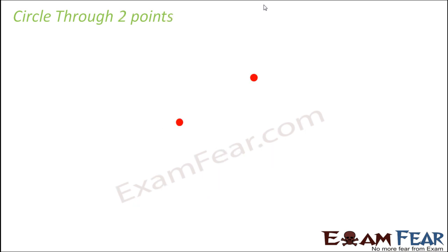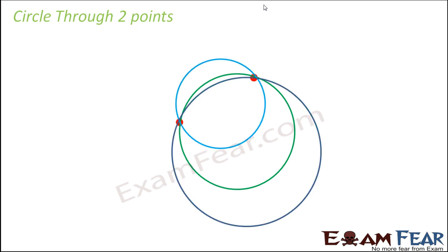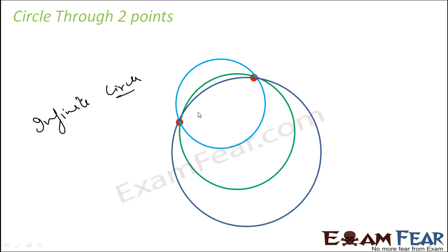Let's try to see with two points. So we can draw one circle like this, like this, like this. If you see, from two points also we can draw infinite circles. So if we have been given two points, we can draw an infinite number of circles using these two points.